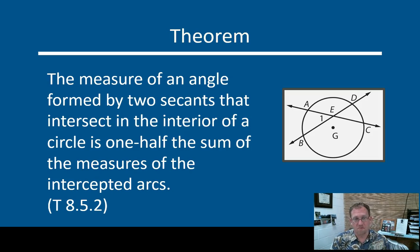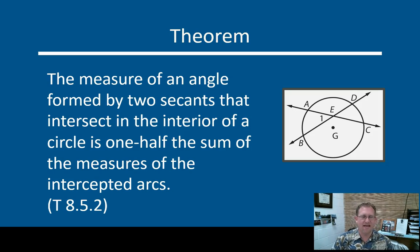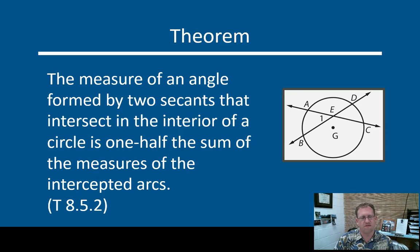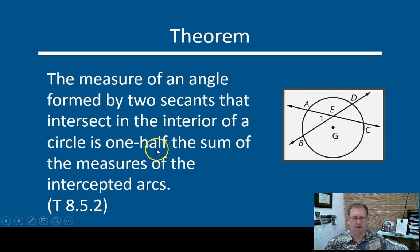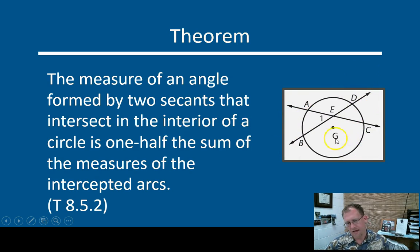Let's get more theorems before the next example. The measure of an angle formed by two secants that intersect in the interior of a circle is one half the sum of the measure of the intercepted arcs. It's a lot of words — look at the picture, the picture is more helpful. Here we have a circle. Here we have two secant lines, and they intersect in the interior of the circle.